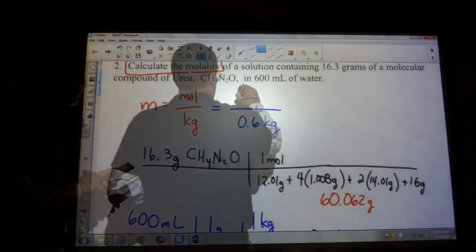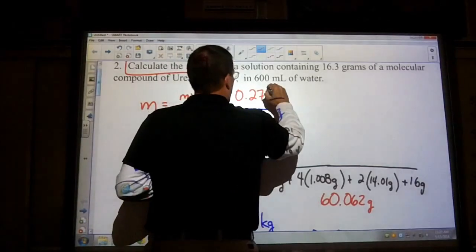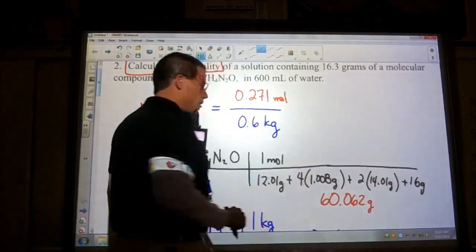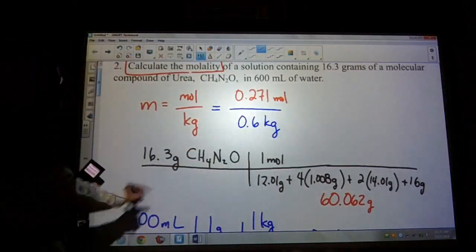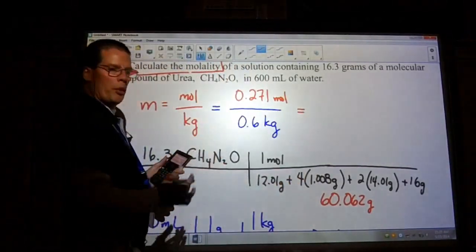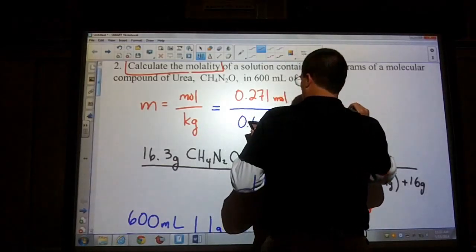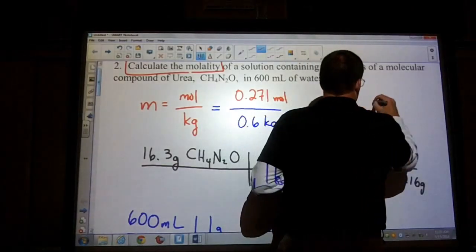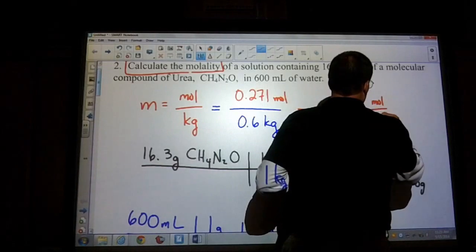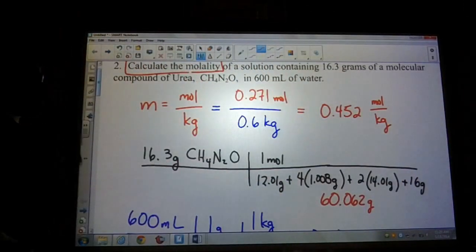So take 16.3, 0.271 moles, which is, leave that value in your calculator. You have that, and then divide it by 0.6. And our molality is moles per kilogram. Our molality is 0.452. And I would leave it as moles over kilograms, just to keep you out of trouble there.